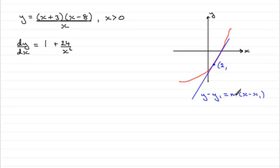And as for m, we can get the gradient of the tangent at this point x equals 2 by putting x equals 2 into here, dy dx, which gives us the gradient at any point on our curve.